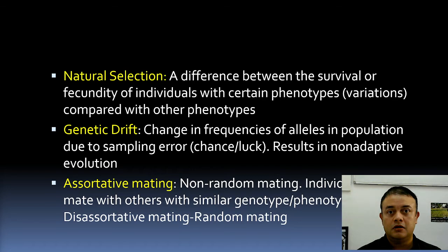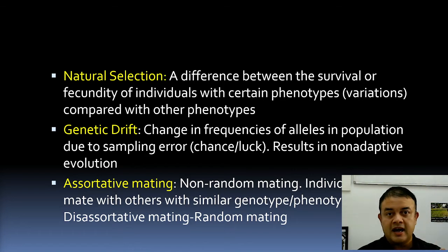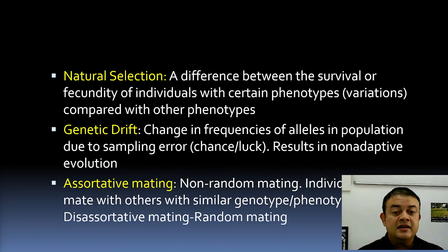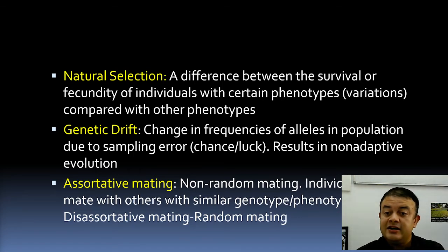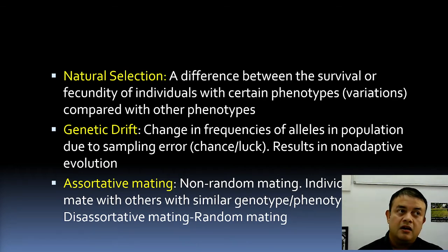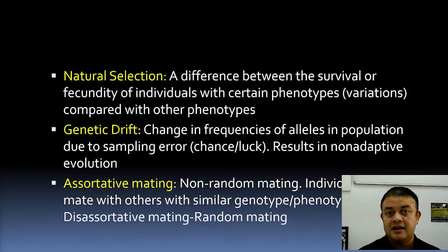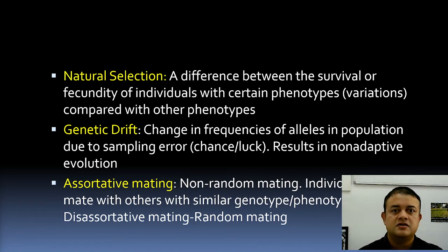Drift can happen at the individual or population level — it is completely chance. Change in allele frequencies in a population due to sampling error — chance or luck — is what drift is. It results in non-adaptive evolution, and drift can sometimes increase the frequency of lethal or non-essential genes. That is the problem with drift, but it is completely random.